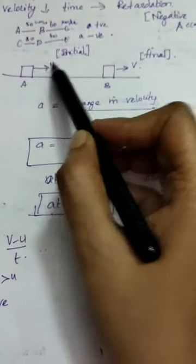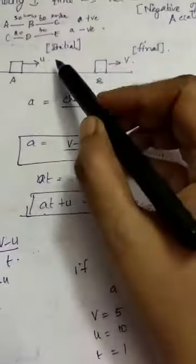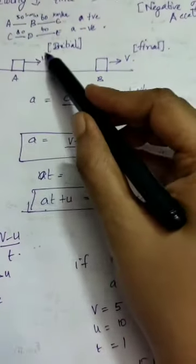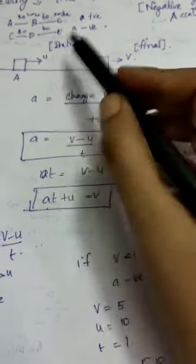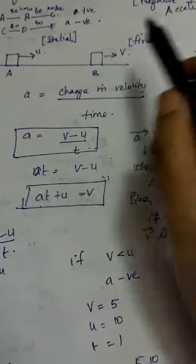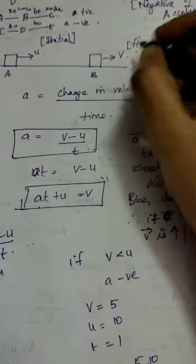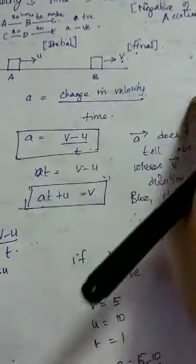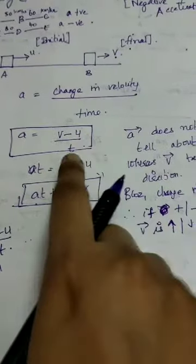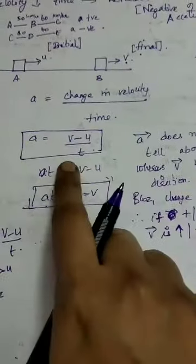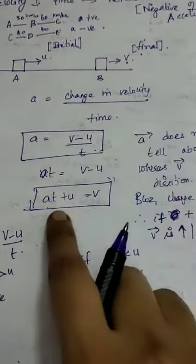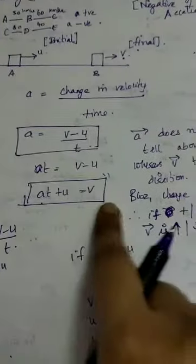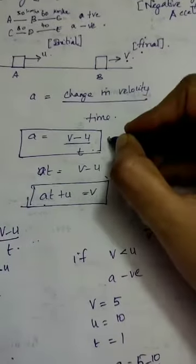Acceleration is defined as change in velocity divided by time taken. At point A the car has an initial velocity — the notation for initial velocity is u. After traveling to point B the velocity changes, and that final velocity is denoted v. So the formula is: a equals final minus initial divided by t, that is a = (v − u) / t. Cross-multiplying gives at = v − u, or v = u + at.